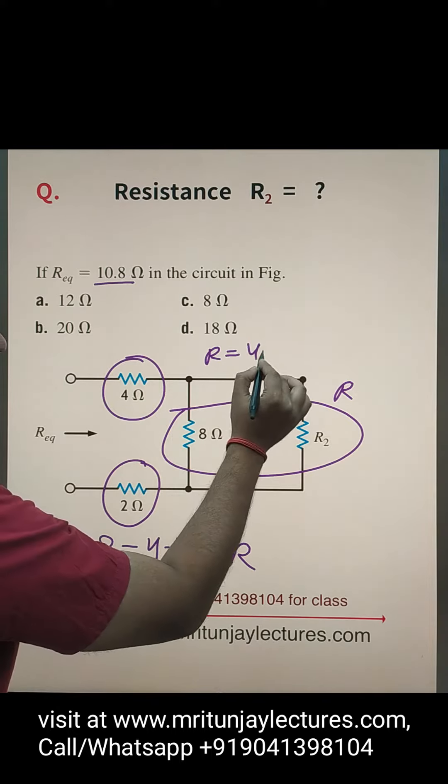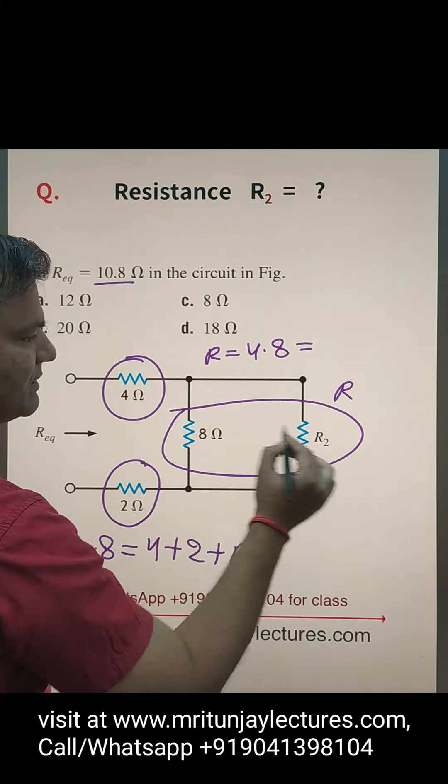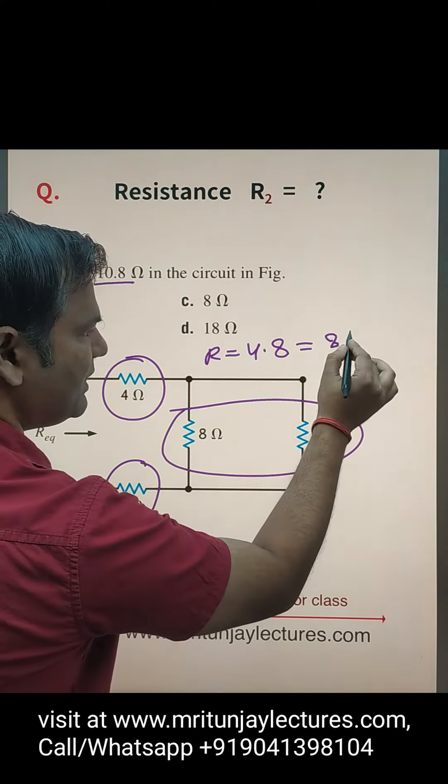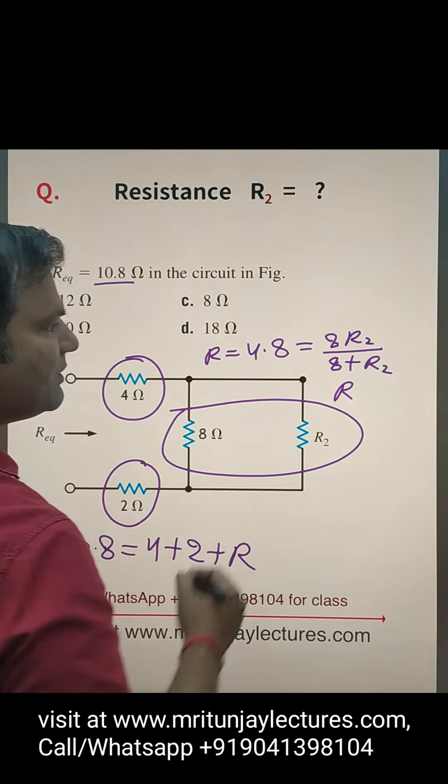4.8. And what about R? R basically, these two are in parallel. So 8R2 divided by 8 plus R2.